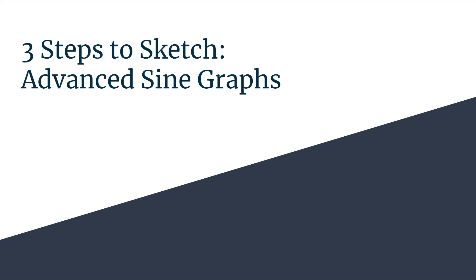Welcome to another three steps to sketch video. Today we're going to be taking a look at a sine graph that has two kinds of shifts, both a phase shift and a vertical shift, and to do that we're going to use our advanced method. So here's the equation we're going to look at: y equals negative 3 sine of 2x minus π minus 1.